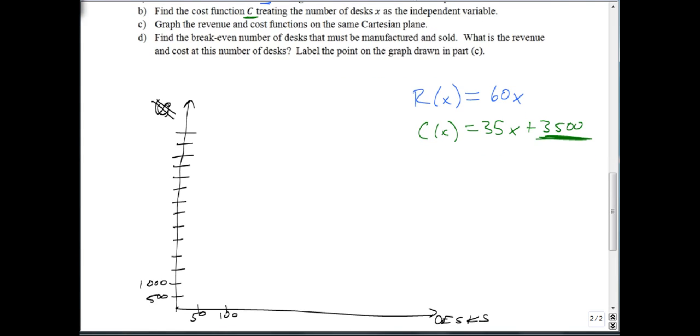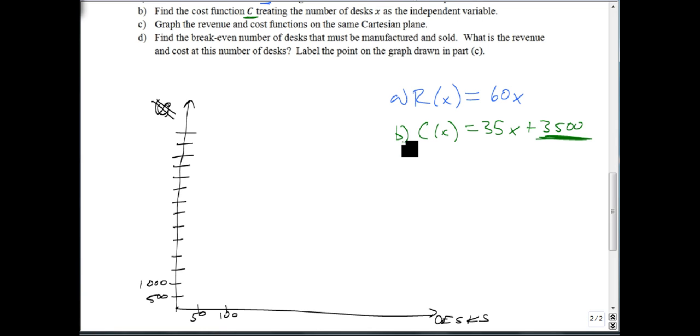So this happens to be our answer for A, and this is our answer for B. Now we're going to jump to C, and I want you to notice our tick marks here, going up the side, they are $500. Going across, they are 50 desks. And I did this for a particular reason, just to make this easier to graph.